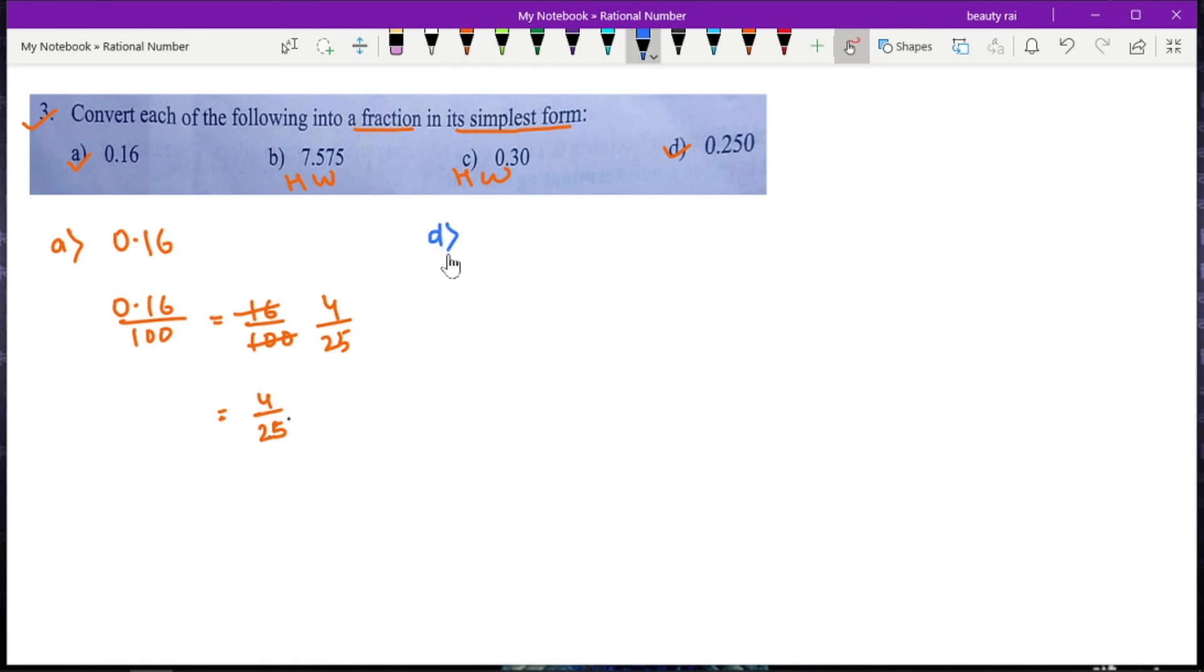Now we'll solve part d: 0.250. In this question we have three digits after the decimal, so we put 1000 in the denominator. The fraction will be 250/1000. Now we simplify by dividing: 25 into 250 is 10, and 25 into 1000 is 40, so you will get 1/4 as your answer.